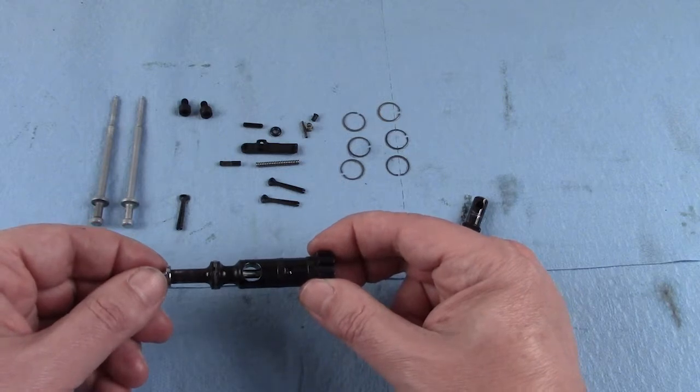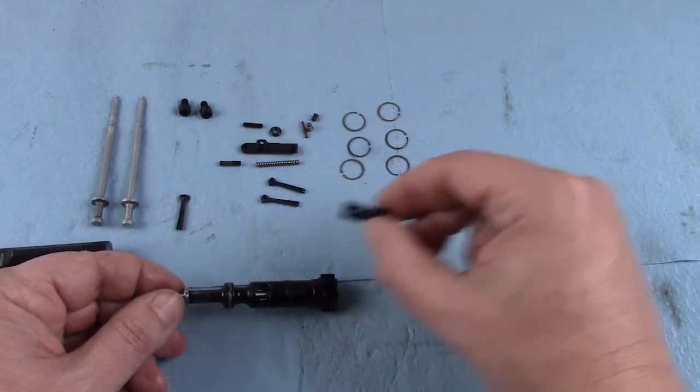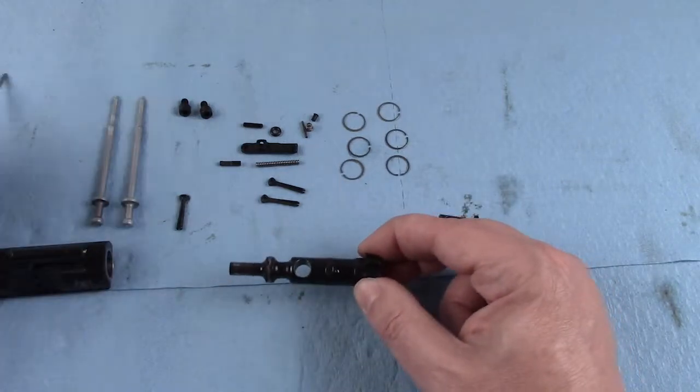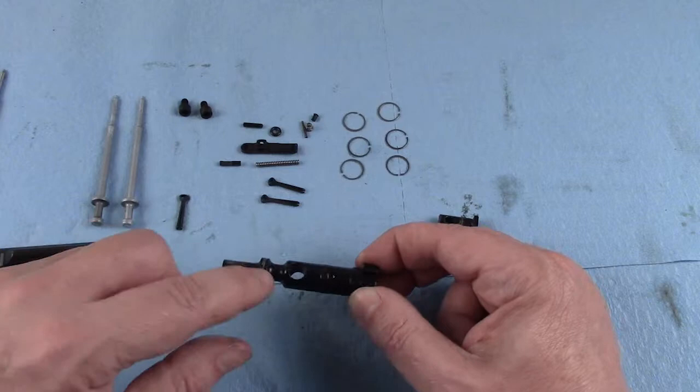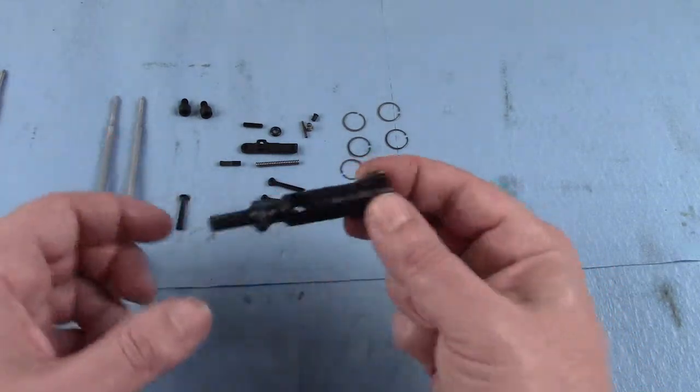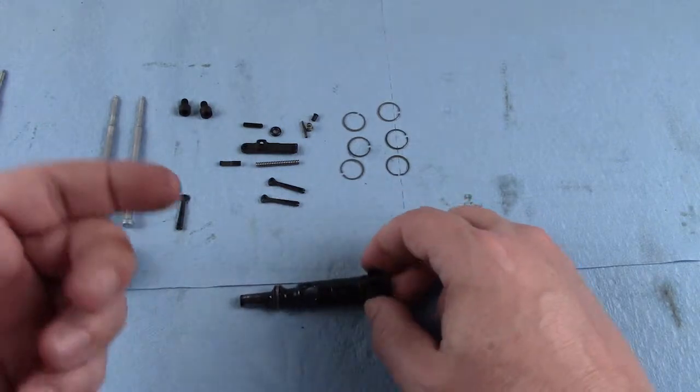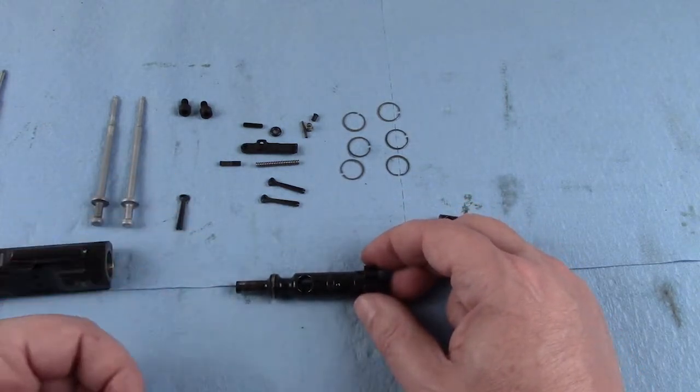You can see where the firing pin runs, and the firing pin actually runs through this. Your gas rings are right here. There are three of them. Make sure that they're free-floating. Make sure that you keep this area lubricated and cleaned. Preferably, you do it every time that you fire the weapon and you go to the range.